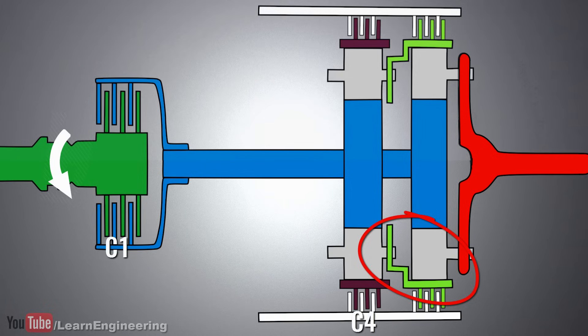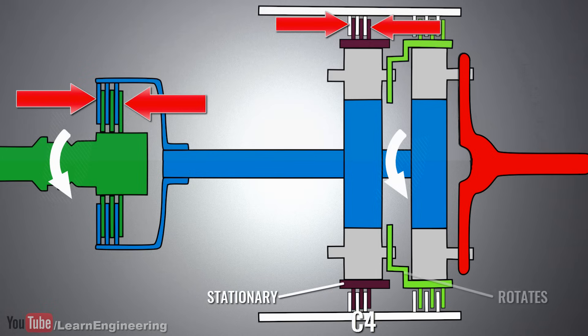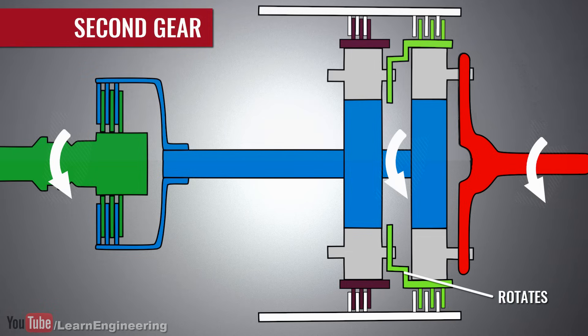Think for a moment about what happens when you apply C1 and C4. Since C4 is applied, the ring gear of the second set will be stationary. This makes the carrier turn. This carrier is connected to the ring gear of the first set. So the ring gear of the first set will also turn. This in turn will increase the output speed, or we will get the second gear.